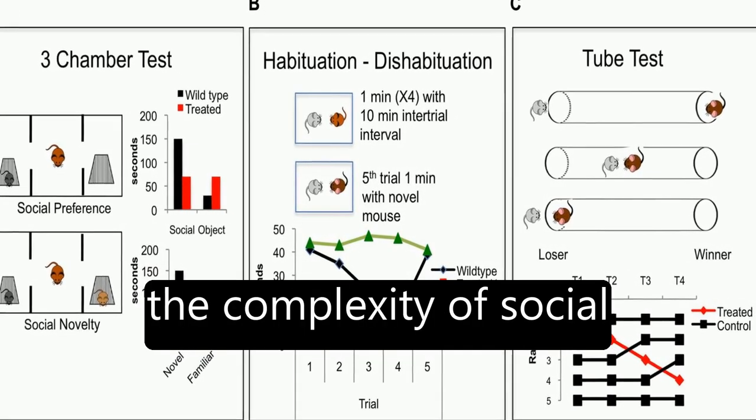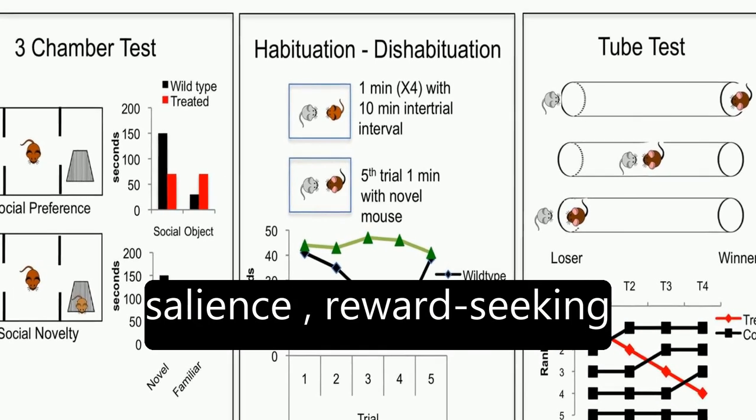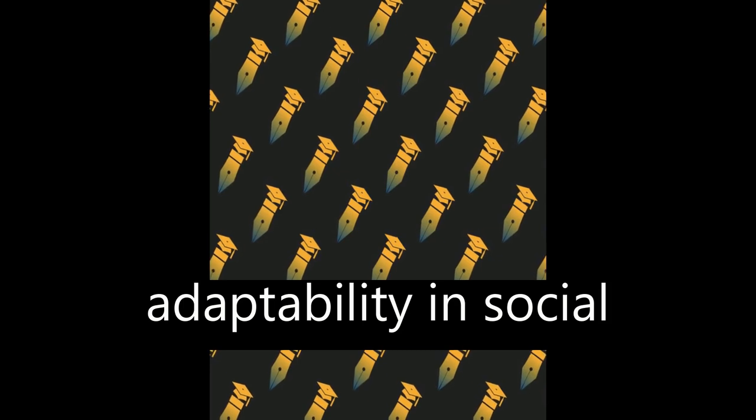The article discusses the complexity of social cognition, which involves a range of behaviors including salience, reward-seeking, motivation, self-awareness, and adaptability in social groups.